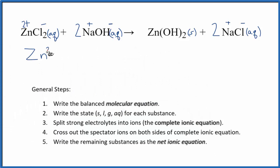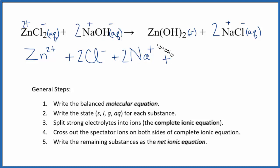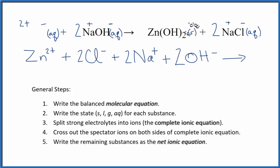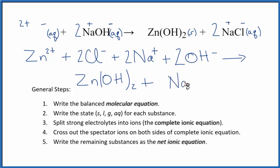So we have Zn2+, plus Cl−. The subscript 2 means we have 2 chloride ions. Plus we have the sodium ion, Na+, and the coefficient means we have 2 sodium ions. Plus our hydroxide, OH−, and we have 2 hydroxide ions — this 2 applies to everything. Those are the reactants. For the products, we don't split the solid, so we write Zn(OH)2 as a solid. Plus we have Na+, 2 of those, and then the chloride ion, 2 of those as well. This is the complete ionic equation.